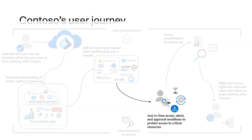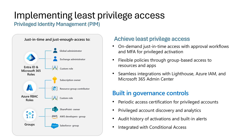Over time, users may get assigned to admin roles and amass more and more admin privileges. What you really want is to provide just enough access and just-in-time access for what is needed. This helps reduce the user's risk profile, so even if a privileged user gets phished or attacked, the overall risk is vastly reduced. With Microsoft Entra Privileged Identity Management, you can provide just-in-time access to Entra ID, Microsoft 365, and Azure roles. You can also provide just-in-time access to groups in Entra, allowing users to access privileged resources in non-Microsoft applications.